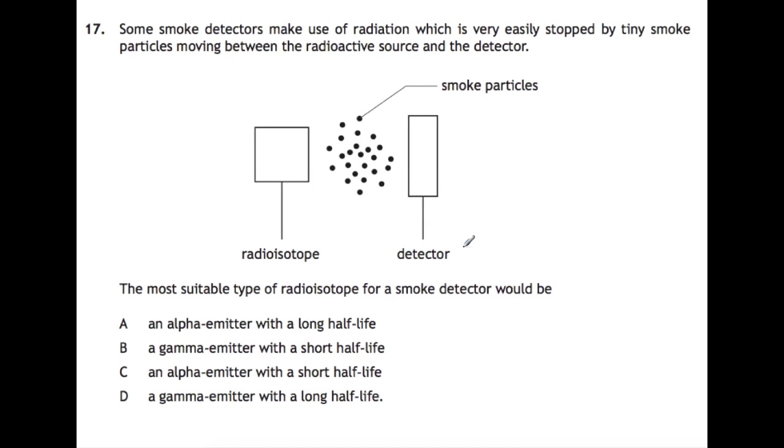Question 17. Some smoke detectors make use of radiation which is very easily stopped by tiny smoke particles moving between the radioactive source and the detector. So here we have a picture of the radioisotope. Here are some smoke particles and the detector. The most suitable type of radioisotope for the smoke detector would be what? So it needs to be something which could be easily stopped. So the most easily stopped type of radiation is an alpha. So we can ignore B and D. And it needs to have a long enough half-life that this decay would be continual. So the answer is A.